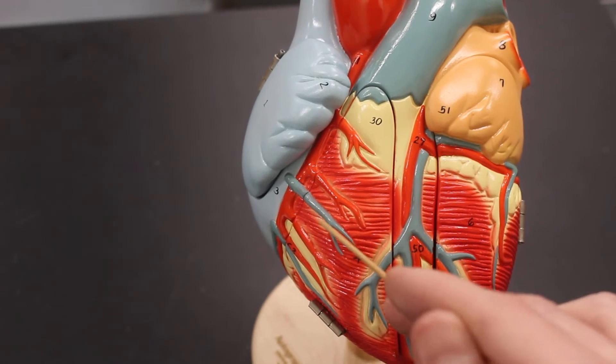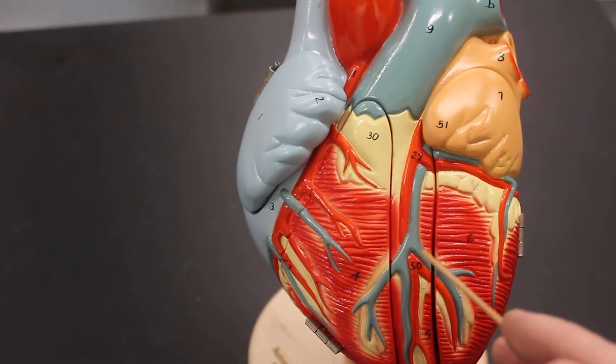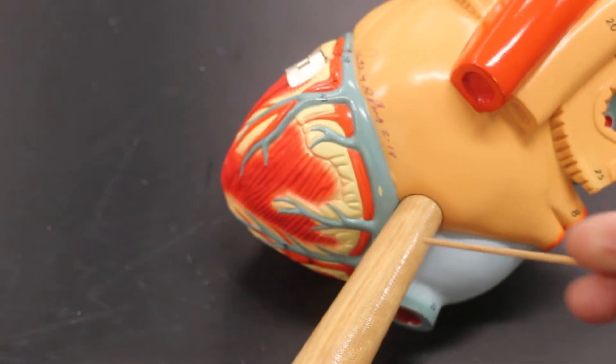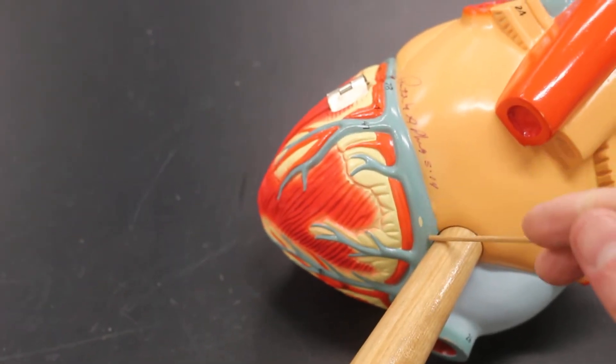All these blue vessels are cardiac veins and then we go to the back of the heart and way over here is the coronary sinus.